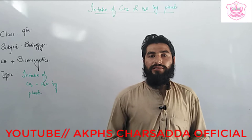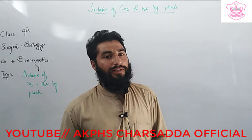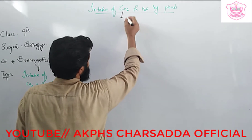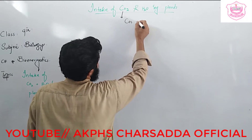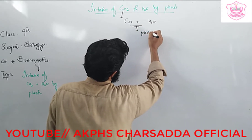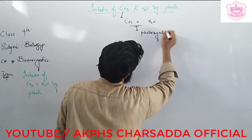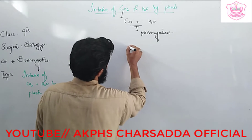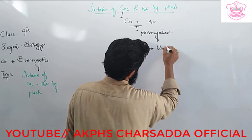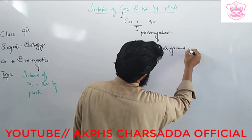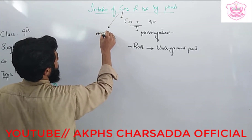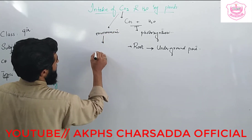Assalamu alaikum dear students. In the previous class we discussed photosynthesis, and today our topic is the intake of CO2 and water by plants and photosynthesis — how plants use CO2, how plants absorb water, and how these two are used in photosynthesis. A plant absorbs water by the root, which is also called the underground part, while CO2 is diffused from the environment to the plant, especially to the leaves.